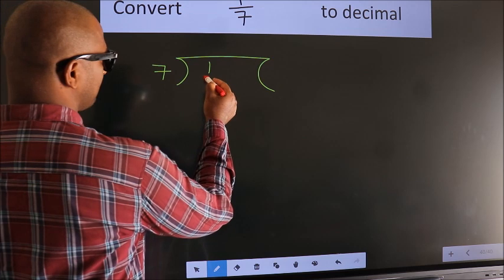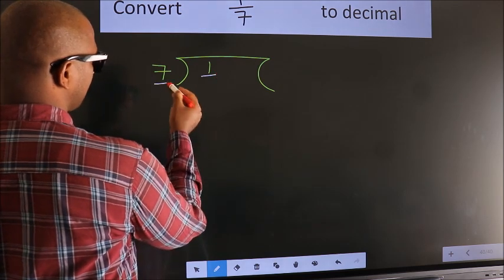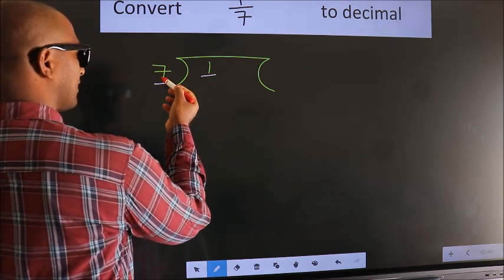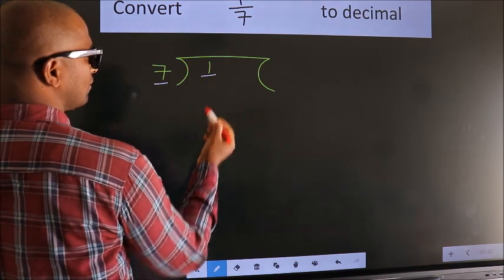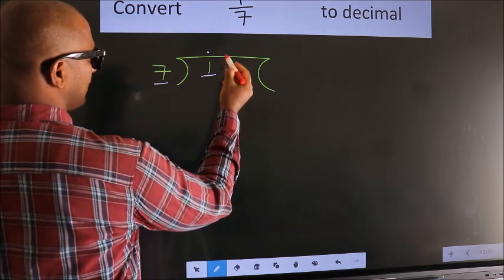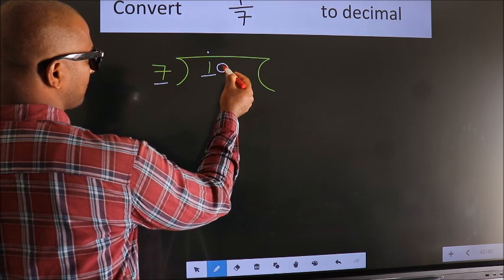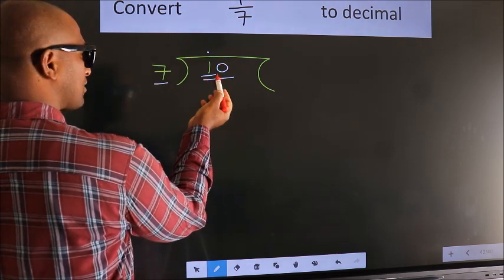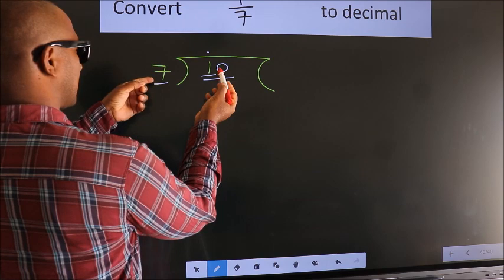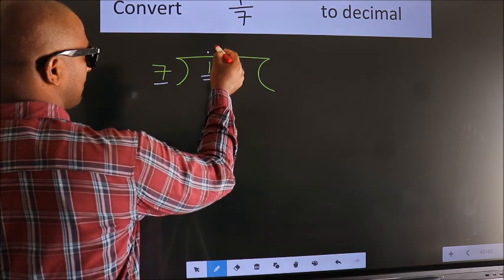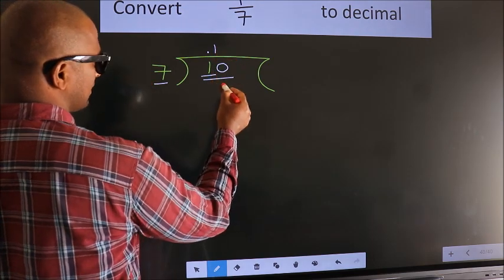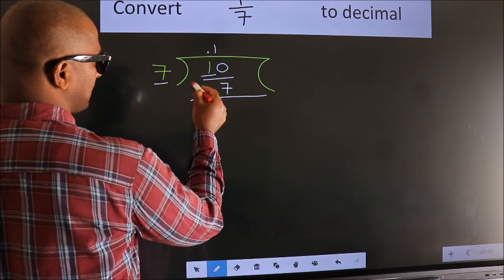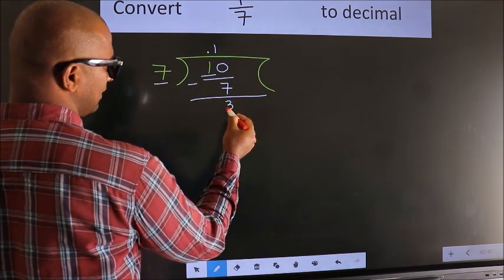Here we have 1, here 7. 1 is smaller than 7. So what we should do is, we should put a dot here and take 0 here. So, 10. A number close to 10 in the 7 table is 7 once 7. Now, we should subtract. We get 3.